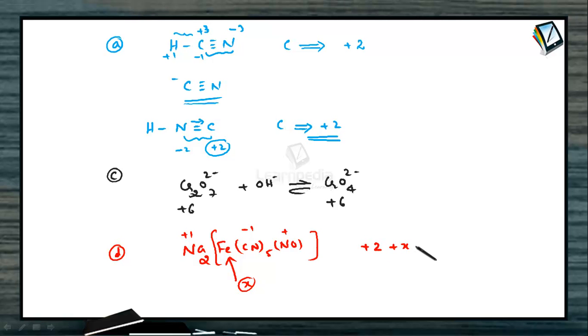Each cyanide as a whole is -1. So if we take iron oxidation state as X, we have +2 for sodium, X for iron, -5 for 5 cyanides, and NO group as a whole +1. Net charge equals 0. So we have X + 2 - 5 + 1, that is X - 2 = 0. X equals +2.